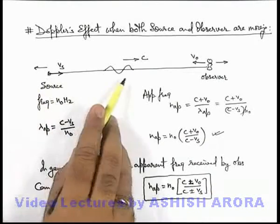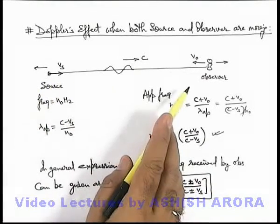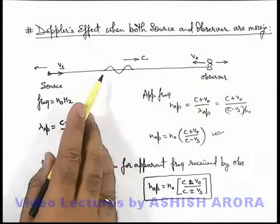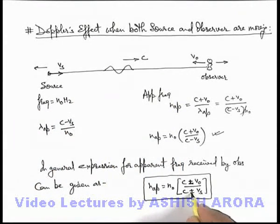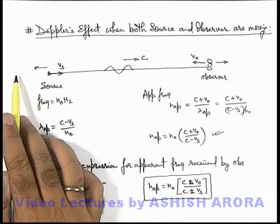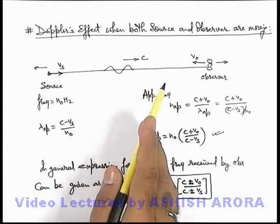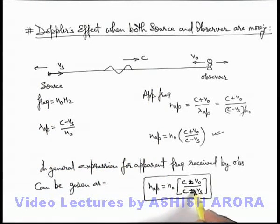Similarly, if source is approaching, the frequency received will increase due to approach, so in denominator we choose negative sign because decreasing denominator will result in increase in frequency. And if source is receding away, this will result in decrease in frequency, so in denominator we choose positive sign as increasing denominator will decrease the frequency.